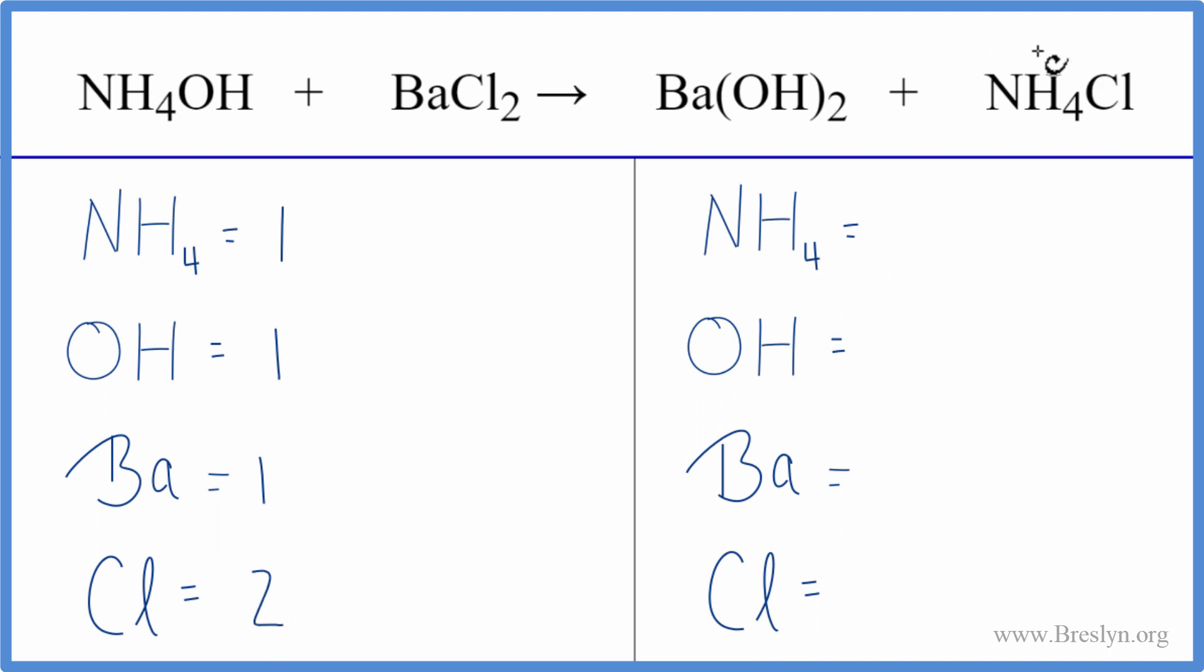On the product side, we have the one NH4, we have two of these hydroxides, two of these OH ions here, so we have one barium and one chlorine.